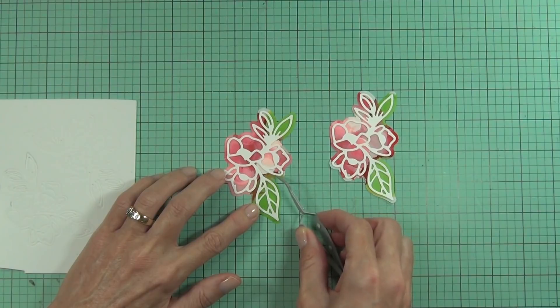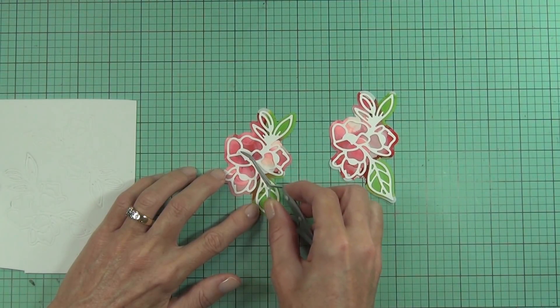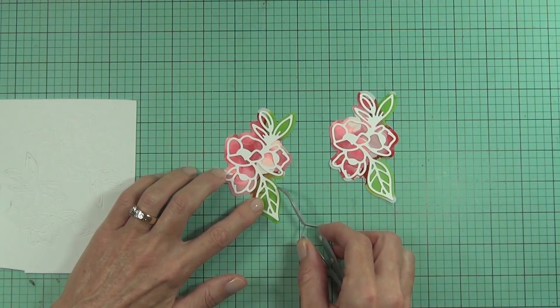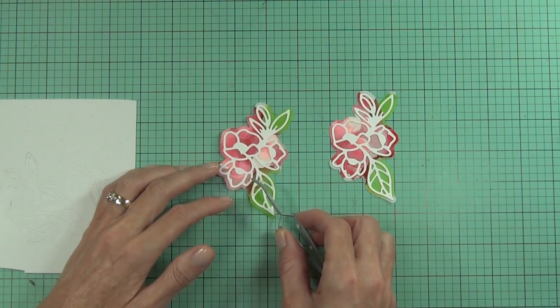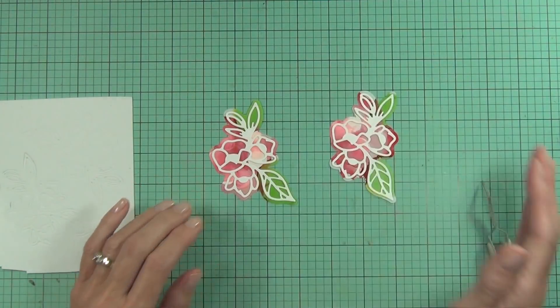I'm glad I didn't give up on this design because there was a point there I was thinking this just isn't working, I'm going to have to start again. But I've just added some matte medium to adhere the outline die cut to the white cardstock on top.